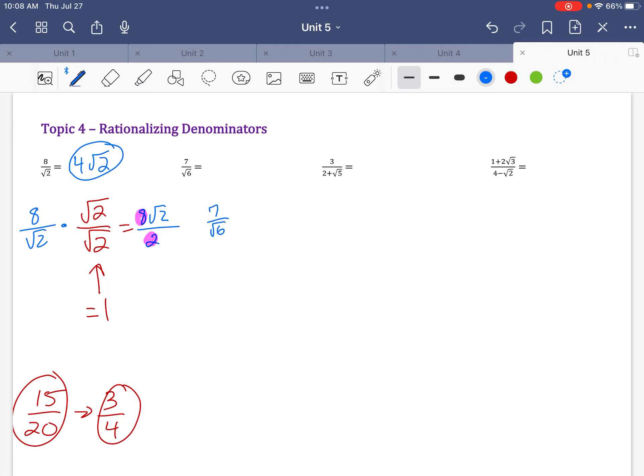That's it. All right, so here I've got 7 radical over radical 6. So I have radical 6, radical 6 to multiply by, and I get 7 radical 6 over 6 pops out, and that's finished. Nothing reduces. So 7 radical 6 over 6.